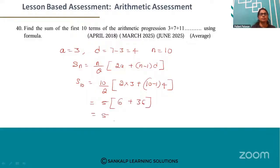This is equal to 5 into 36 plus 6 is 42. 42 into 5 is 210.